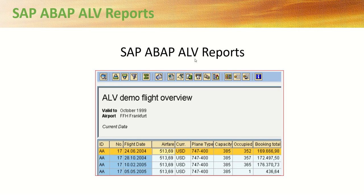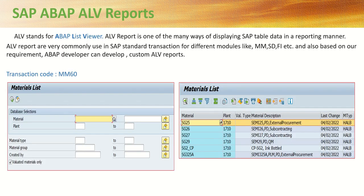Let's see what is the meaning of SAP ABAP ALV reports, how it is used, and what are the different features available. ALV stands for ABAP List Viewer, and ALV report is one of the many ways of displaying SAP table data in a reporting manner.